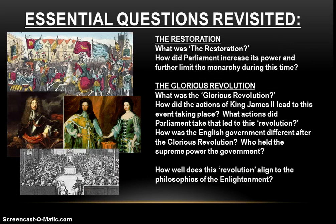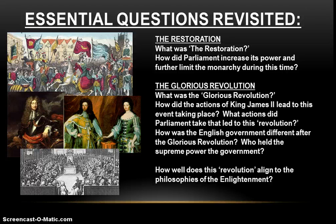So we saw the Restoration and the Glorious Revolution. The Restoration was when the Stuart dynasty under King Charles II was restored to power and Parliament began to assert its dominance over the monarchy. Then along came Charles' brother James, who tried to do the absolutism thing again, and Parliament would have none of it — this is where we get the Glorious Revolution, as they invited his daughter Mary and her husband to come in and take the throne, after which Parliament truly reigns supreme. The big question to think about: how well does this revolution align to the philosophies of the Enlightenment and the ideas of classical liberalism? Be ready to talk about that next time. Until then, I bid you farewell.